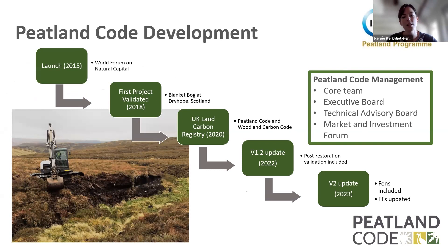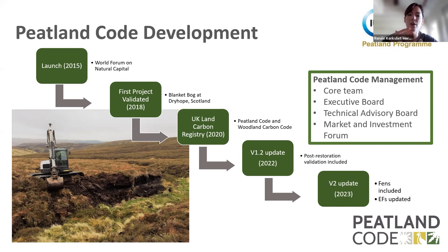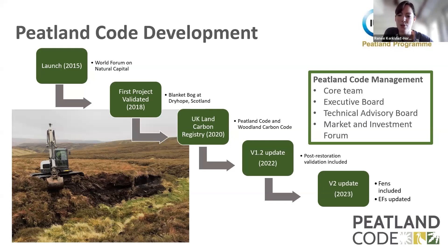Just a little bit on the background. In 2015 the Peatland Code was launched. Then in 2018 the first project was validated — a blanket bog at Dry Hope in Scotland. Then in 2020 we joined together with the Woodland Carbon Code and created the UK Land Carbon Registry — one place where both carbon code and Peatland Code projects and their units are visible. Then last year we did version 1.2 updates, which was really about UKAS — UK Accreditation Service — compliance with the ISO standard, tightening our language and putting more guidance in place. And then a couple of weeks ago we relaunched version 2 of the Peatland Code, which now has fens included and emission factors updated.